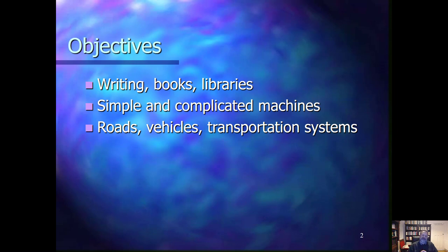First we will look at writing, including books and libraries — can we view this as a subsystem of society and to what extent? Then we will consider machines, both simple and complicated, and look at their role in the context of society through systems theory. And then we will look at roads, vehicles, and transportation systems from this perspective.